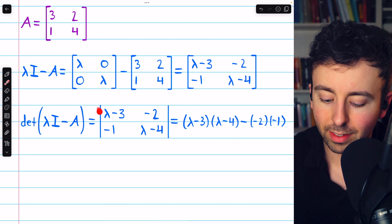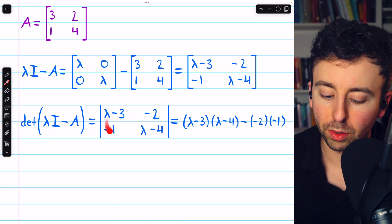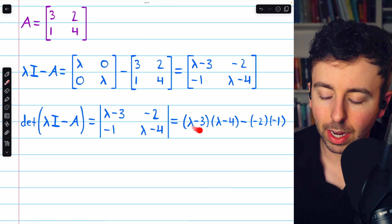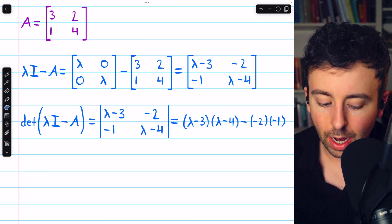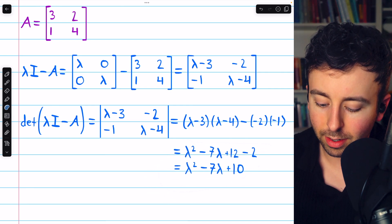The determinant we're looking for is the determinant of this matrix we just found. So lambda minus three times lambda minus four minus negative two times negative one. And then we can do some expansion and simplification.